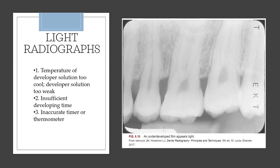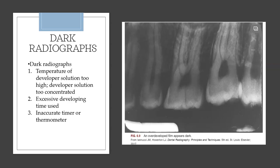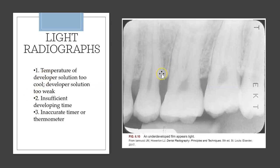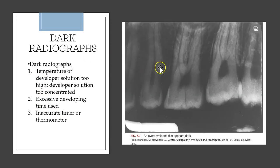A light radiograph is an underdeveloped film, which can happen when the developer solution temperature is too low (too cool). Memory aid: low temperature = light image (both L's). High temperature = dark image.